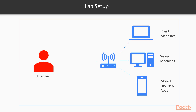Let's talk about the setup. The setup is quite simple. The attacker is trying to attack three kinds of machines: client machines, server machines, and mobile devices and apps, which are inside the network. The goal is to find out the bugs in these kinds of systems.